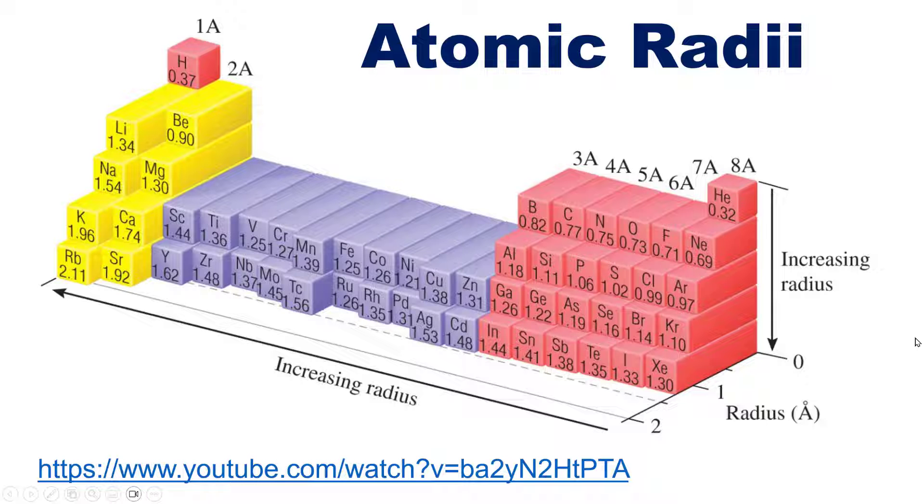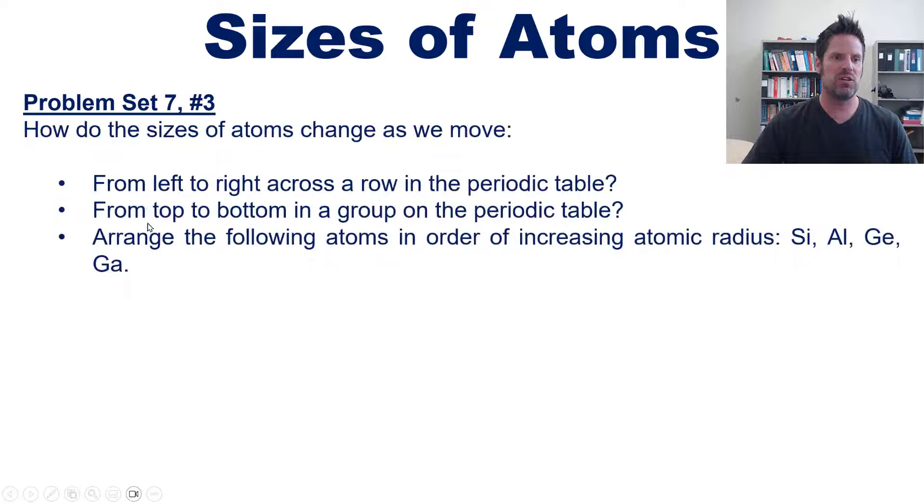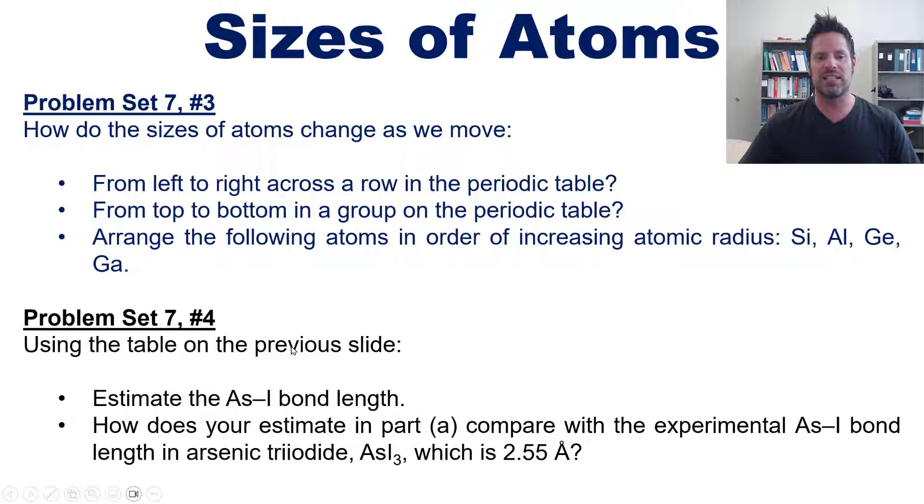We now have all the knowledge necessary to answer these example problems. First, how do the sizes of atoms change as we move from left to right and from top to bottom on the periodic table? Then arrange these four atoms in order of increasing atomic radius. Lastly, using the table on the previous slide, estimate the arsenic-iodine bond length and compare that estimate with the experimental bond length, which happens to be 2.55 angstroms.